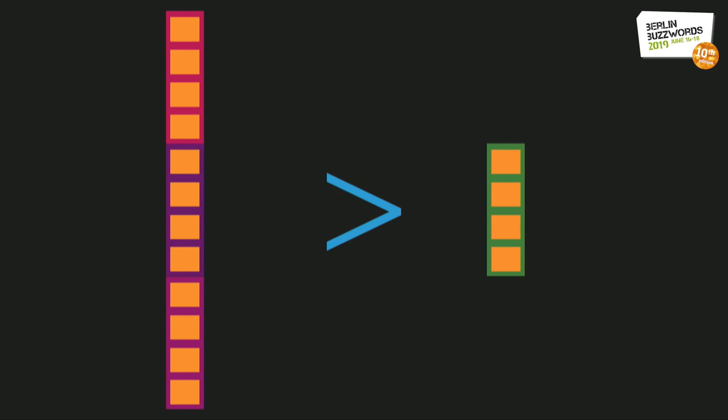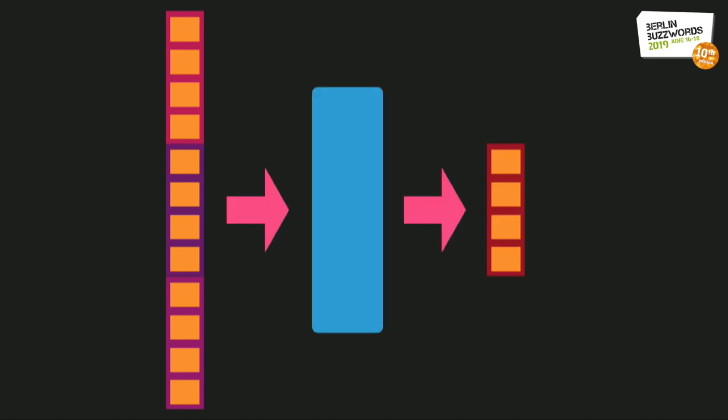Instead, as a final step, we concatenate the three vectors and pass them through a feedforward neural network whose output layer is the same size as the text vector. As an added benefit, this last transformation will also learn to mix the individual signals coming from the method name, API calls, and method tokens in the most illuminating way.